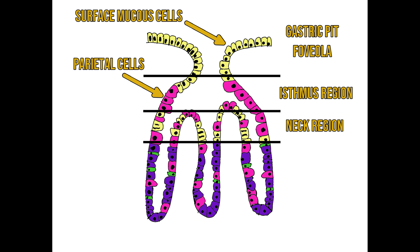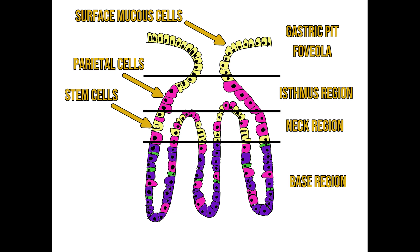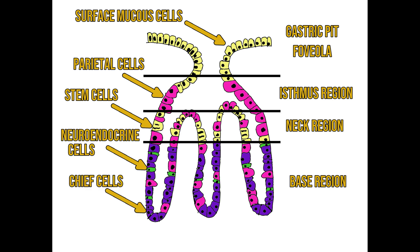The third type of cell in this area are stem cells. In other parts of the gastrointestinal mucosa, stem cells are located at the base of the mucosa in crypts. In the gastric mucosa the stem cells are located in the neck and can either migrate up or down the mucosa depending on what cell type they differentiate into. Finally, there is the base of the gland, which contains three cell types: alongside the parietal cells there are chief cells and neuroendocrine cells.